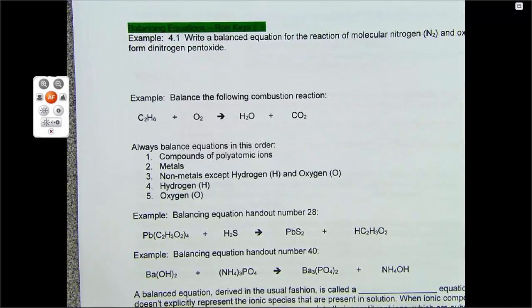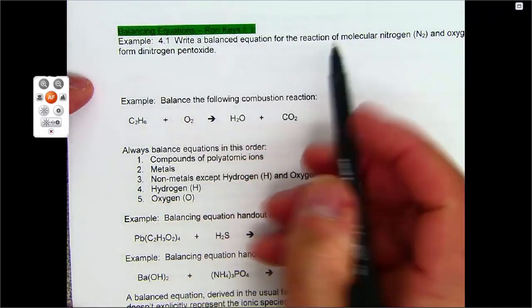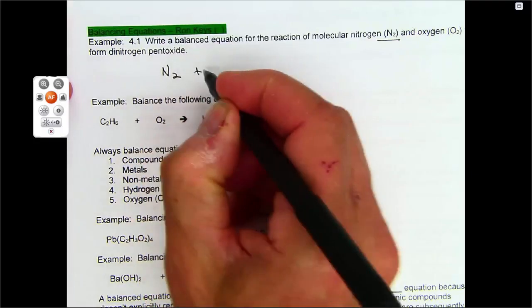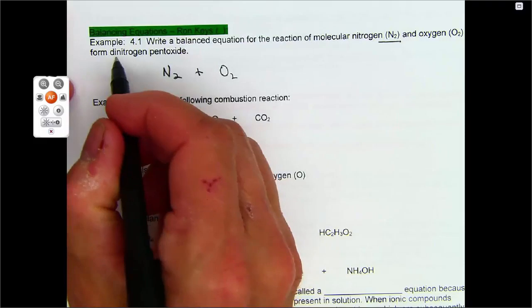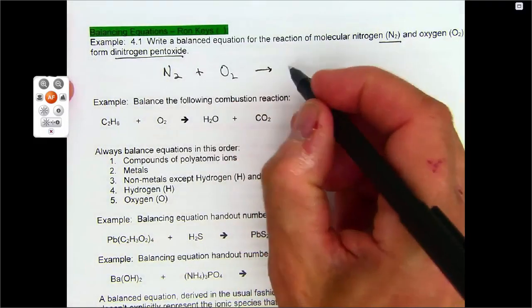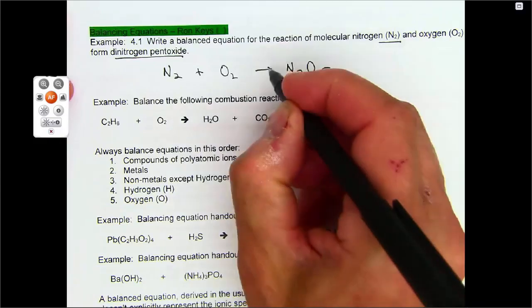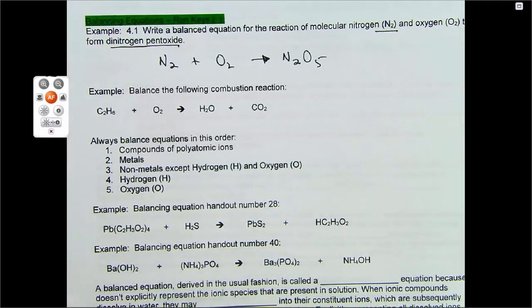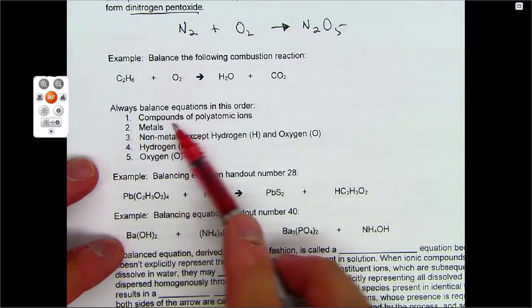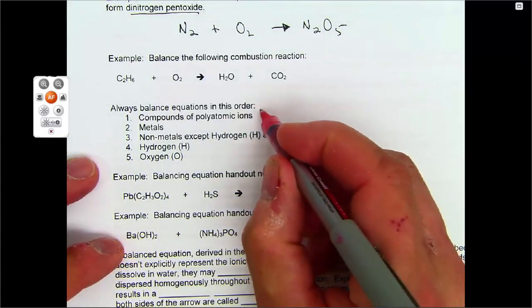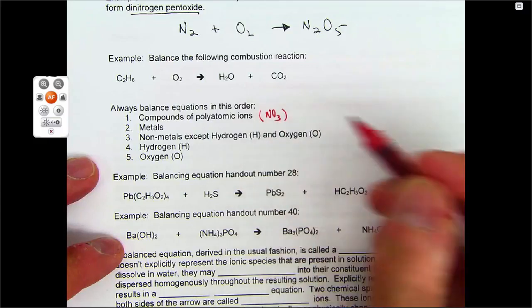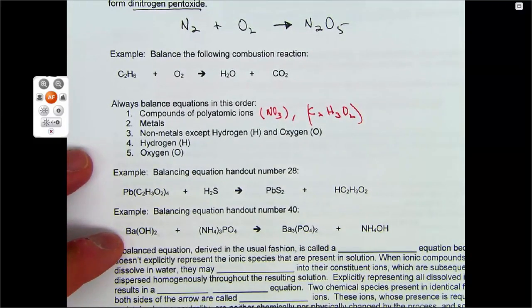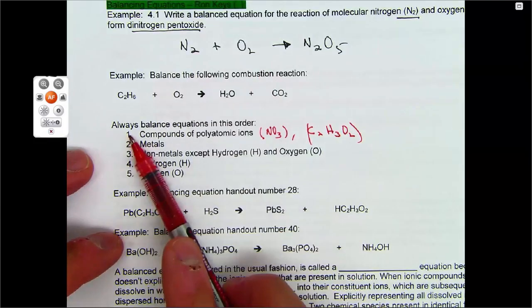Okay, so we're going to do this example. It says write the balanced equation for the reaction of molecular nitrogen and oxygen, so N2 plus O2 to form dinitrogen pentoxide, so dinitrogen N2 pentoxide O5. Okay, now, I'm going to do these steps, there's no parentheses, there are no polyatomic ions, and again, polyatomic ions you might have like nitrate in parentheses or C2H3O2 in parentheses. There are no polyatomic ions, there are no metals,